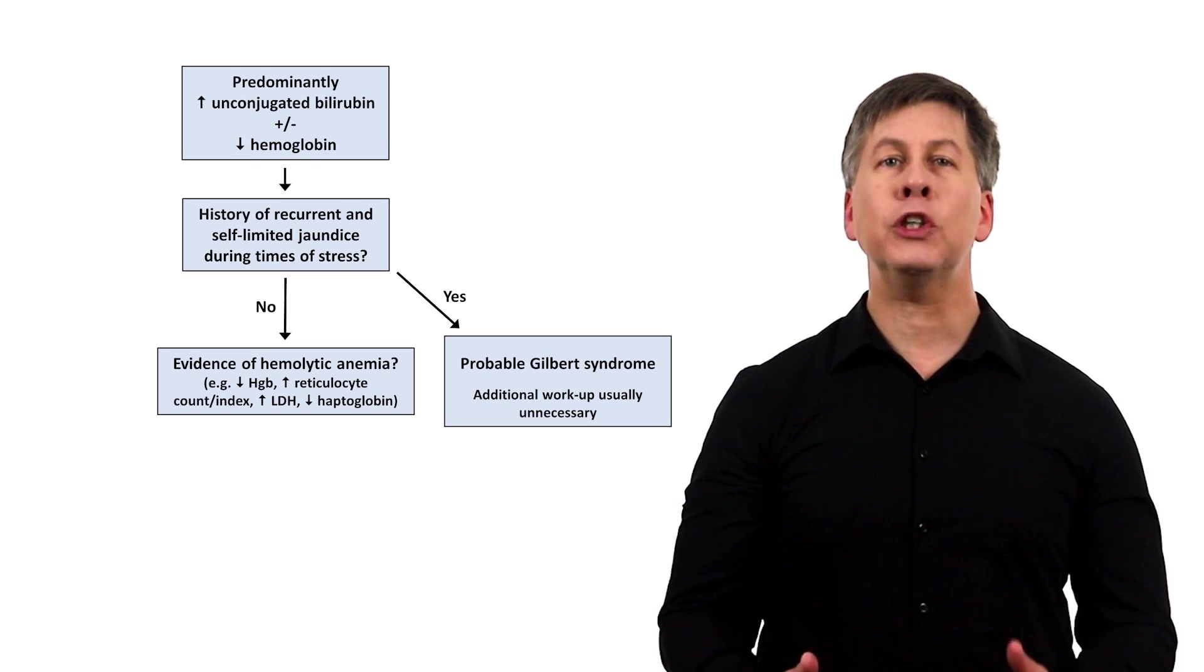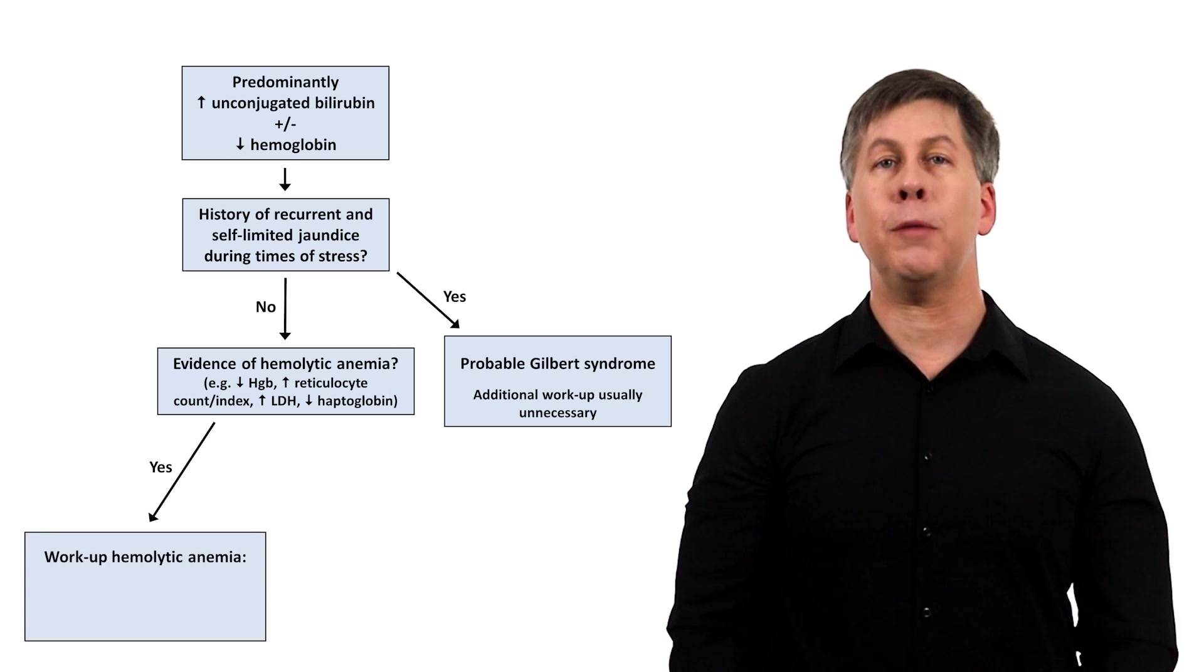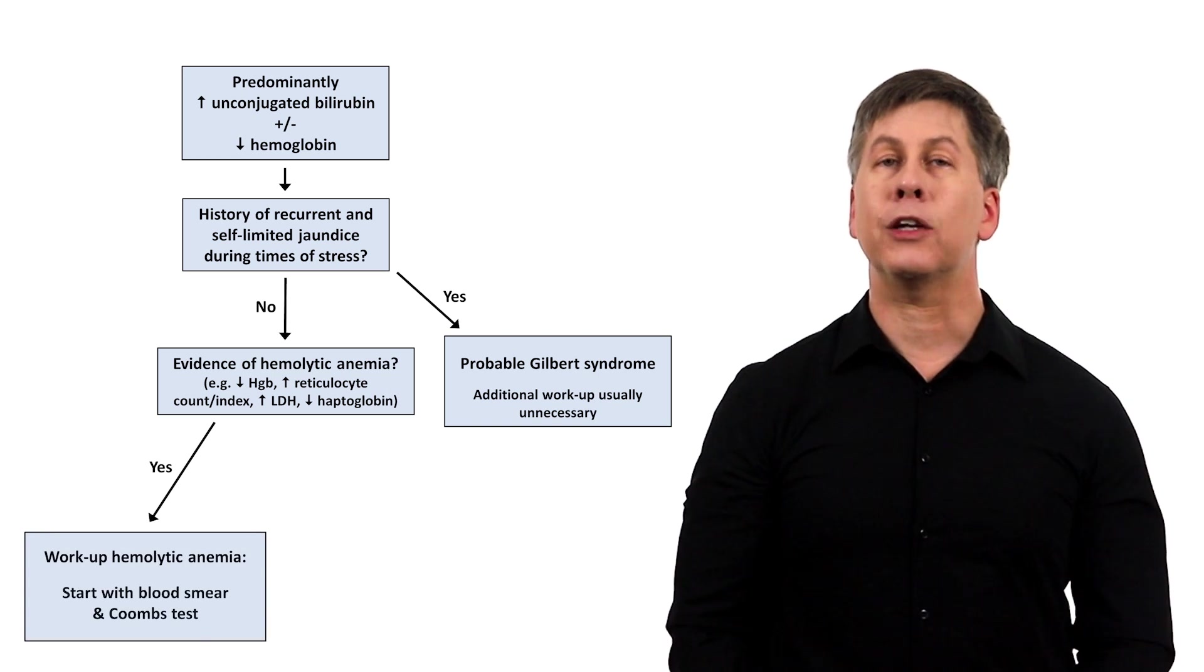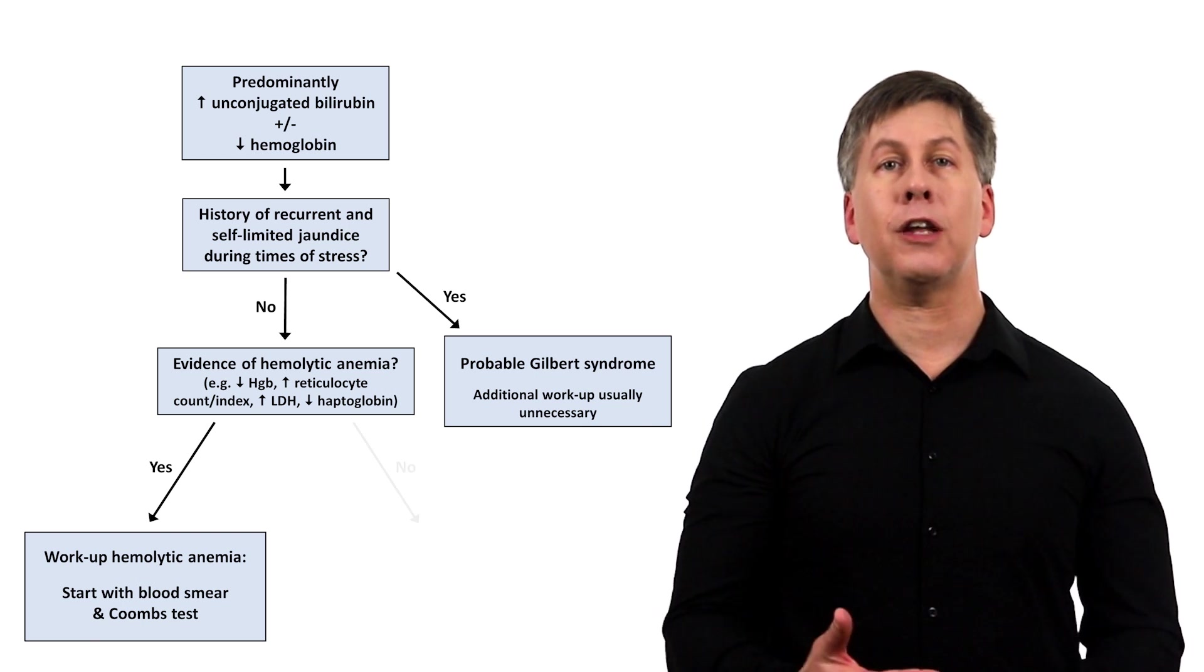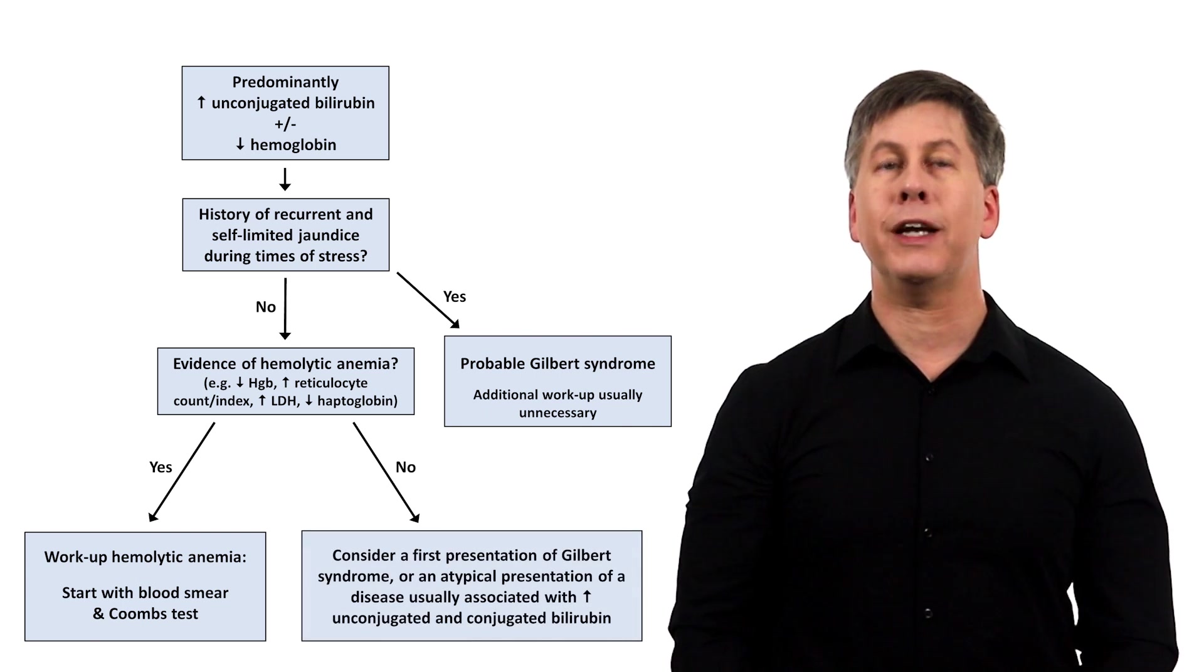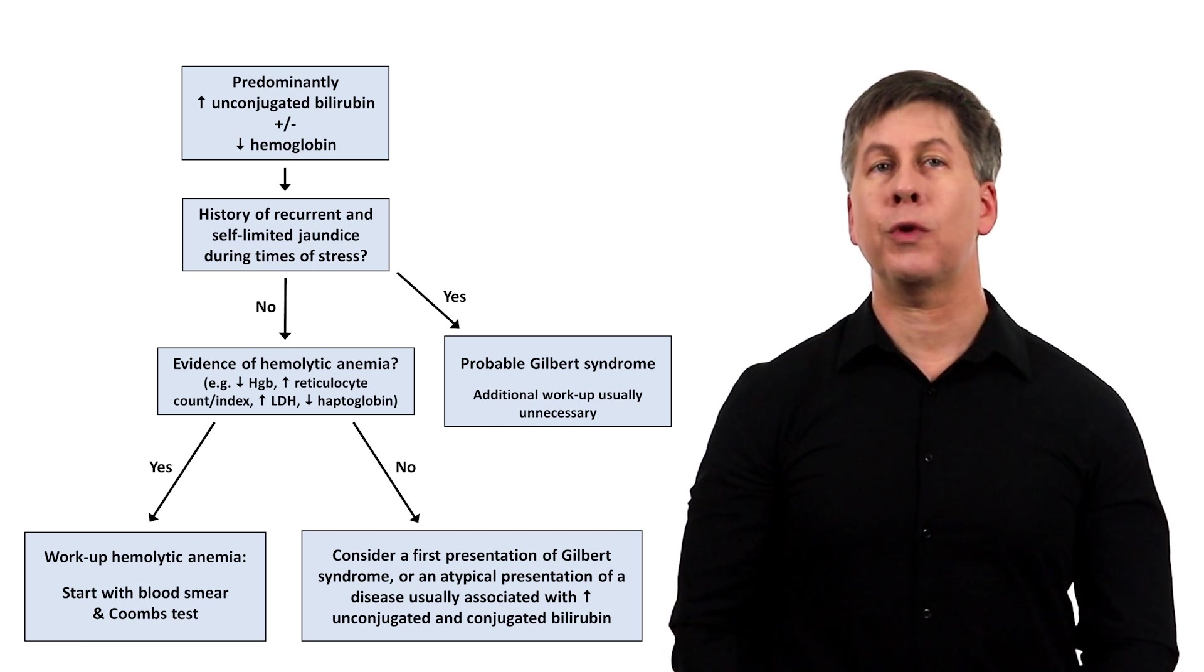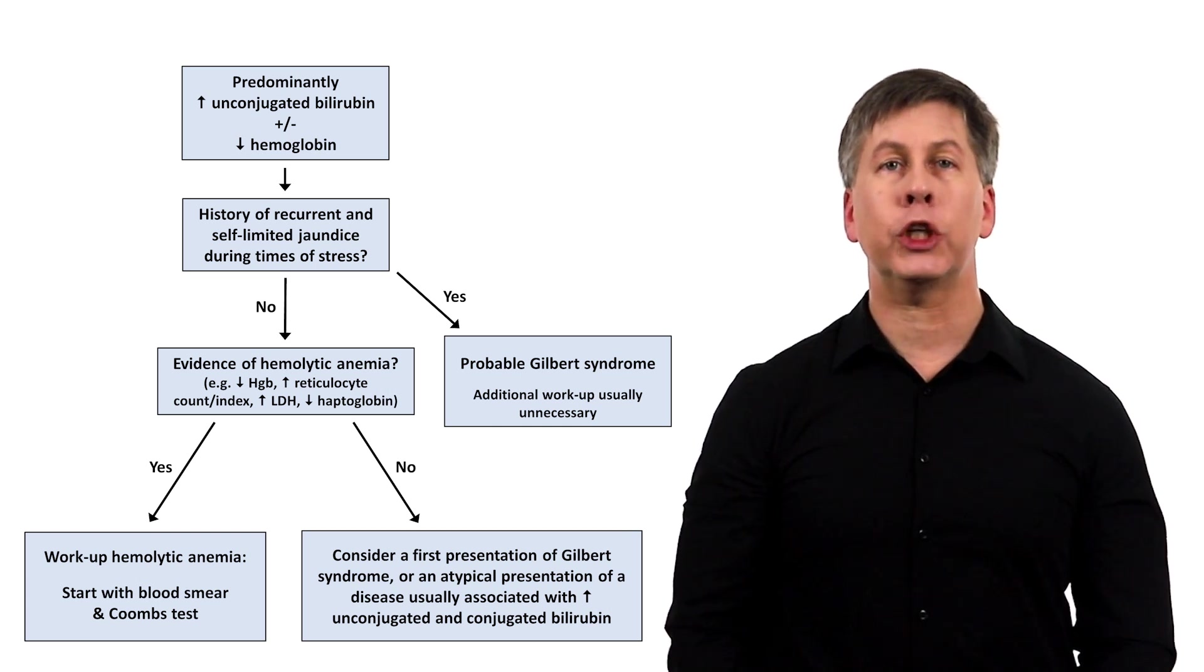If a sufficient combination of those findings is present, work the patient up for hemolytic anemia, starting with a blood smear and Coombs test, if not already performed. If those findings of a hemolytic anemia are not present, consider whether this could be the first presentation of a patient with Gilbert syndrome, or an atypical presentation of a disease usually associated with an increase in both unconjugated and conjugated bilirubin.